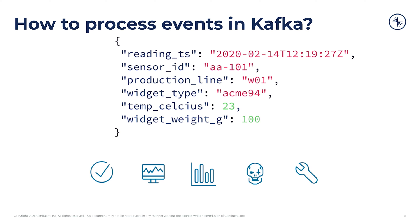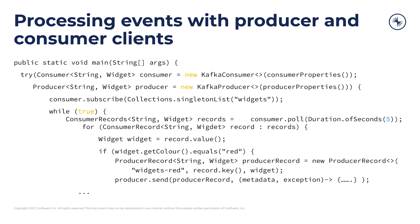You want to make sure the temperature isn't too high, as that might imply something is wrong with the widget. Or if the weight is too low, there might be a manufacturing flaw to inspect. So you have this information flowing through Kafka in this widget schema and you want to do something with it. For example, you might want to focus on a specific kind of widget — maybe you only care about the red widgets, or you've heard something is wrong with them, and you want to filter them out and send them to a special red widget topic.